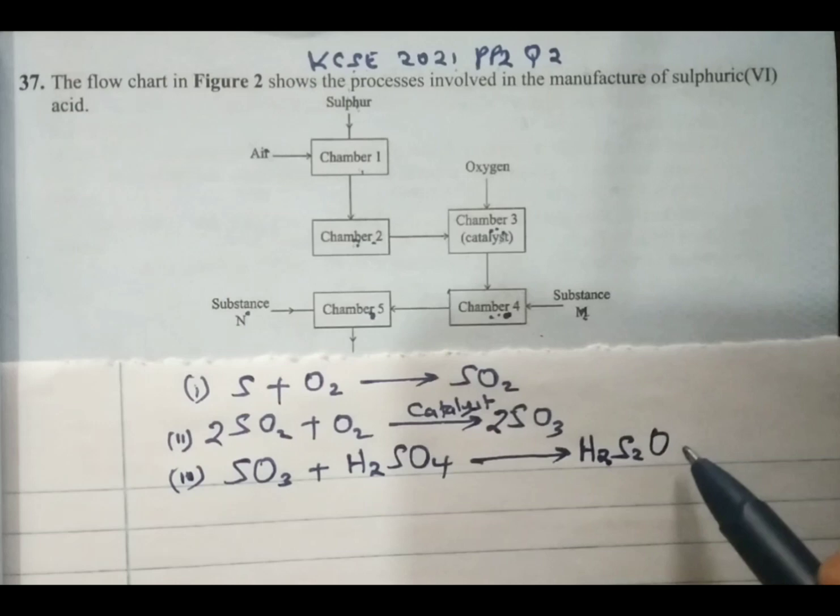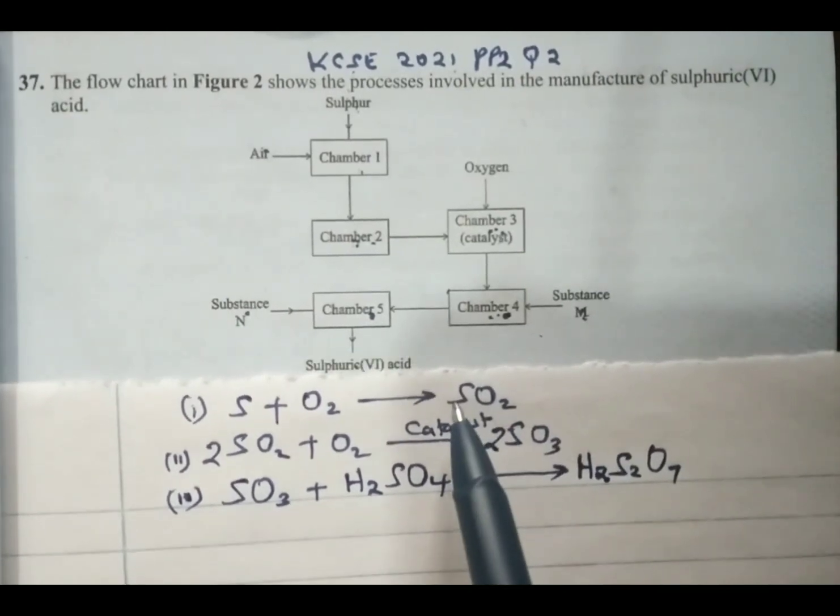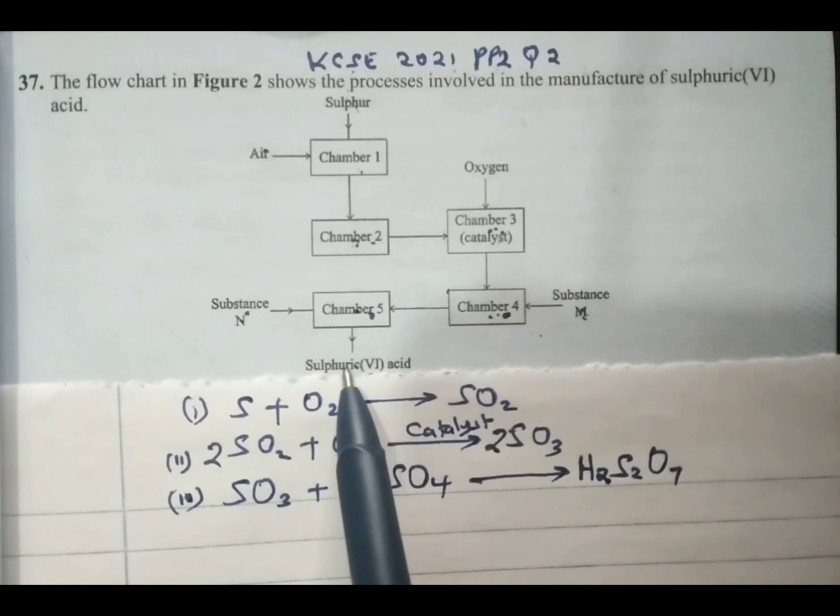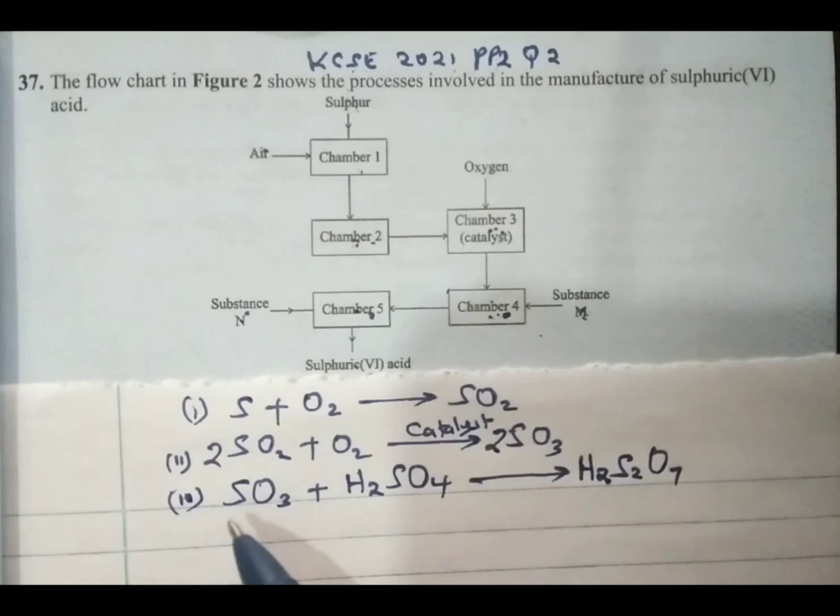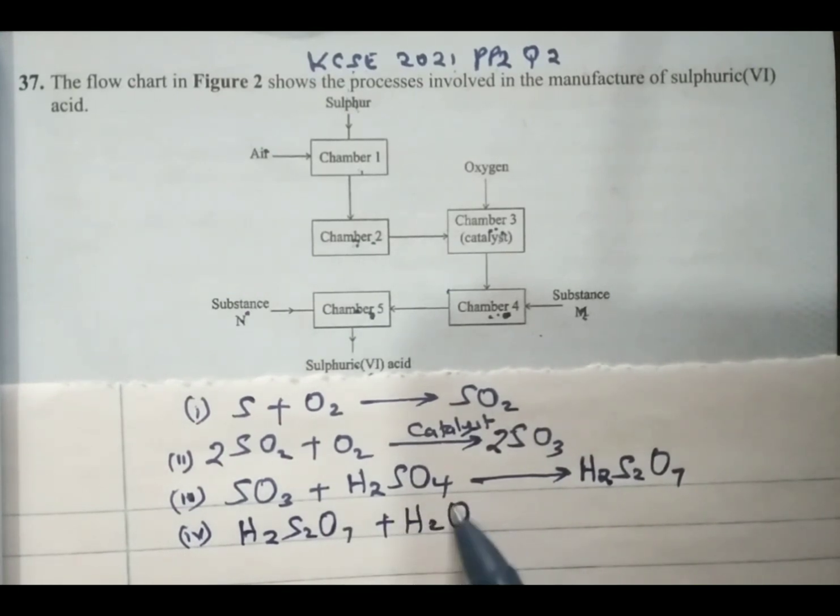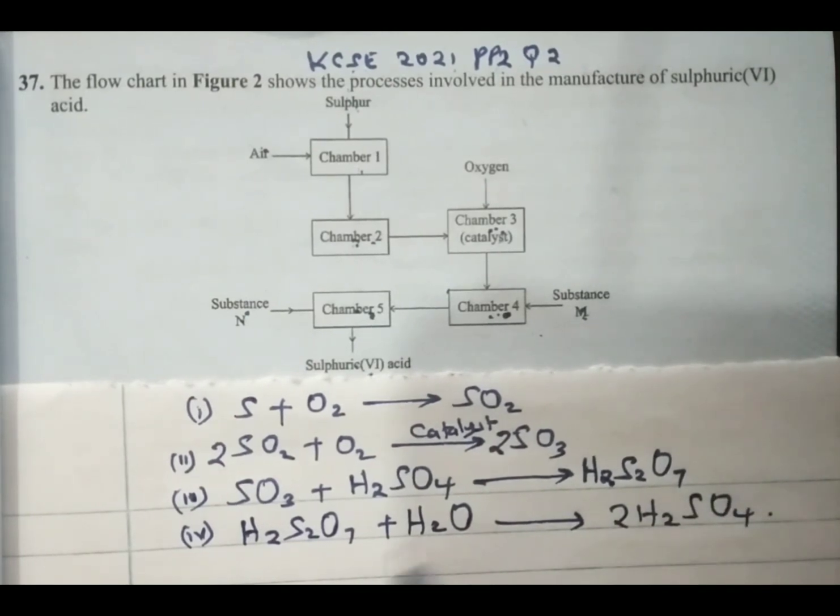Then oleum comes to chamber 5 where it is reacted with substance N to give us concentrated sulfuric acid, and substance N is water. Therefore, we can say oleum is diluted with water to give us two moles of concentrated sulfuric acid.